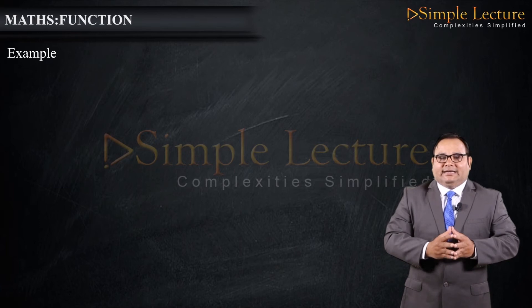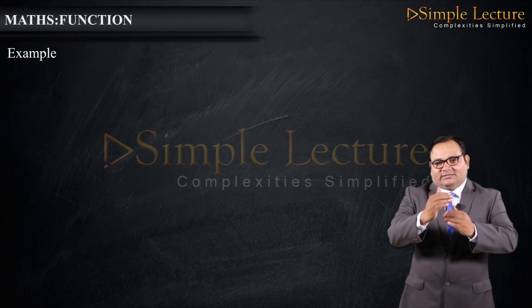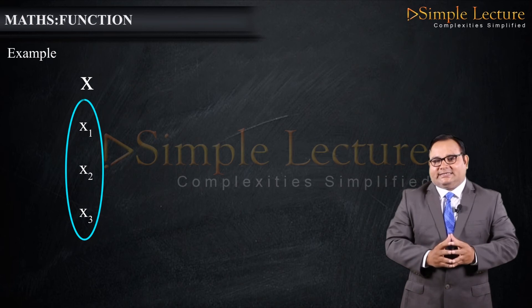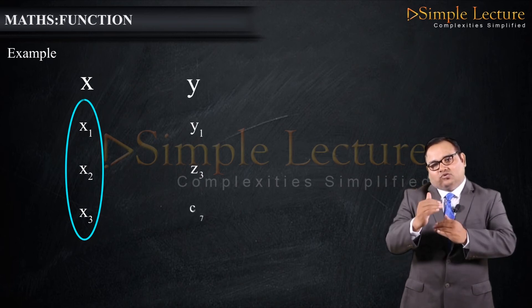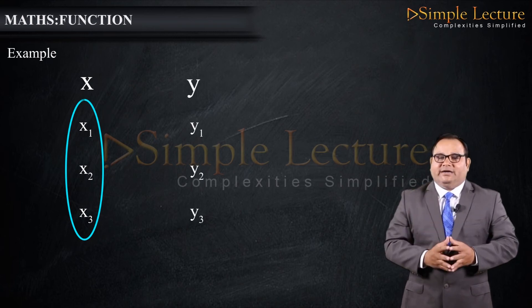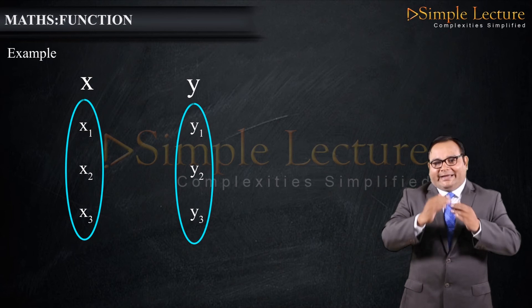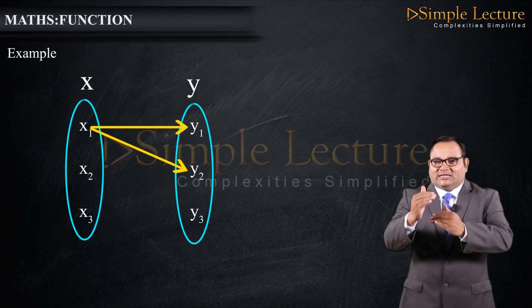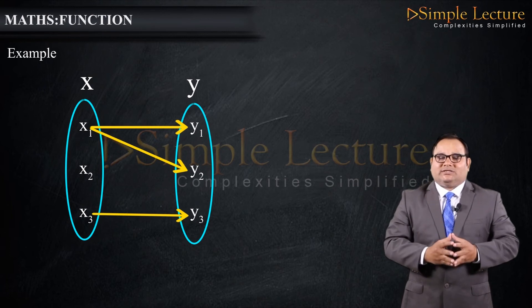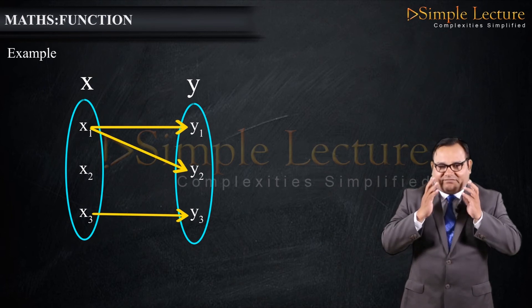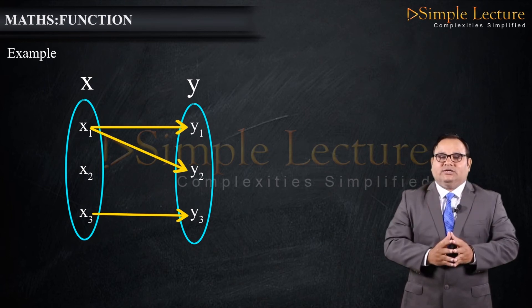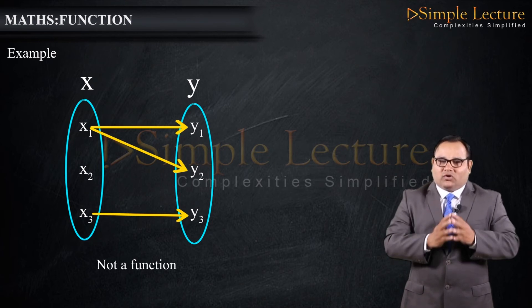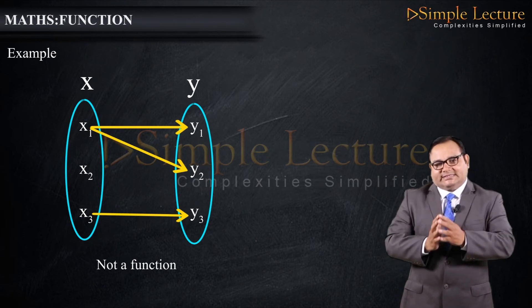Looking at graph examples: in the first example, x1, x2, x3 are elements of set X and y1, y2, y3 are elements of set Y. Here x1 has two outputs — both y1 and y2 — so this does not fit the definition of a function. Therefore, it is not a function.